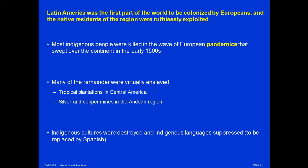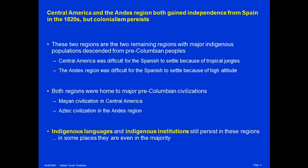Indigenous cultures were destroyed and indigenous languages were suppressed, to be replaced by Spanish throughout the entire region. Central America and the Andes region both gained independence from Spain in the 1820s, along with the rest of Latin America, but a form of colonialism still persists in both regions. These two regions were the regions of Latin America with major indigenous populations descended from pre-Columbian peoples. The reason indigenous peoples survived in these areas and not in others is, first, in Central America, the Spanish had trouble settling because of the tropical conditions.